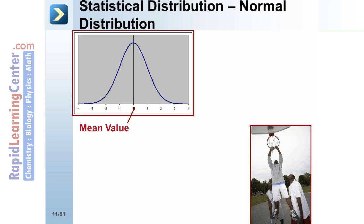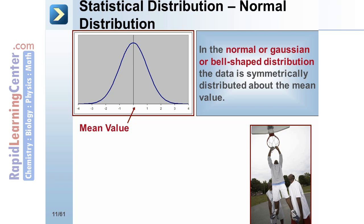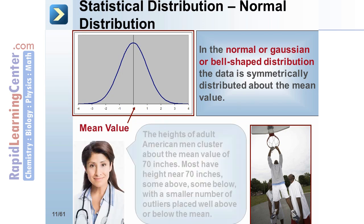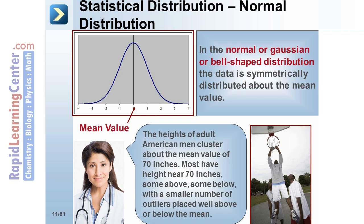Now let's take a look at the ways that data may be distributed. In the normal or Gaussian or bell-shaped distribution, the data is symmetrically distributed about the mean value. It gives a good description of data that cluster around the mean. For example, the heights of adult American men cluster around the mean value of 70 inches. Most have height near 70 inches, some above, some below, with a smaller number of outliers placed well above or below the mean.